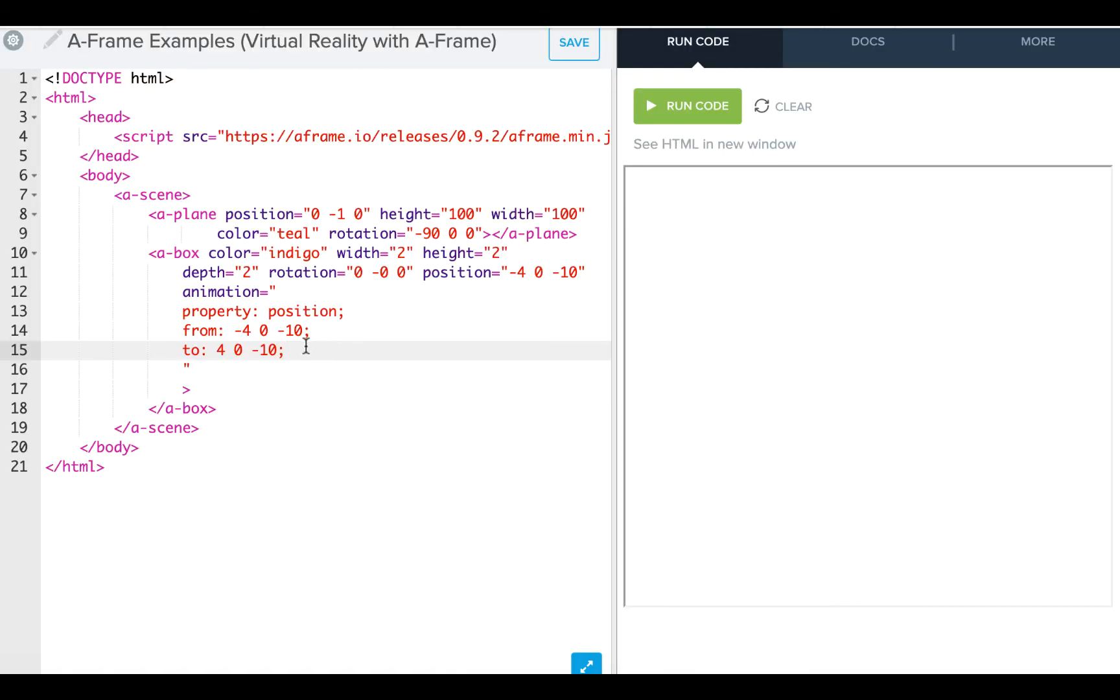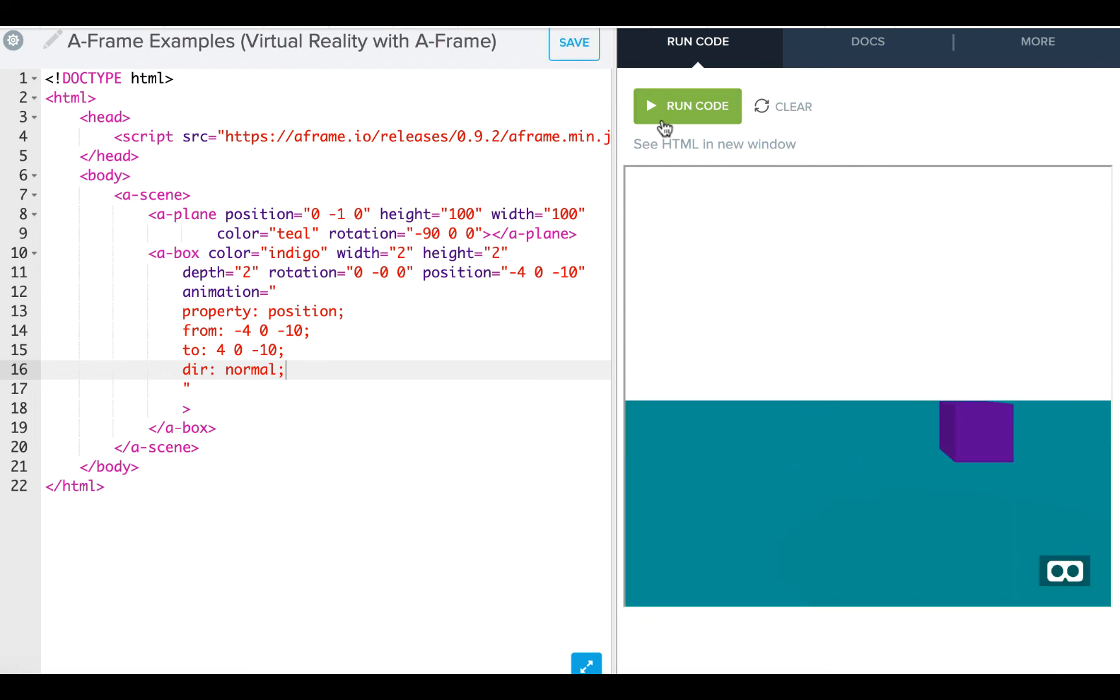Now let's look at the direction. So if I say direction equals normal, I see that my cube animates just as it's been doing. If I say reverse, I actually start at my to position and go to my from position. So again, I'm going backwards in my animation.